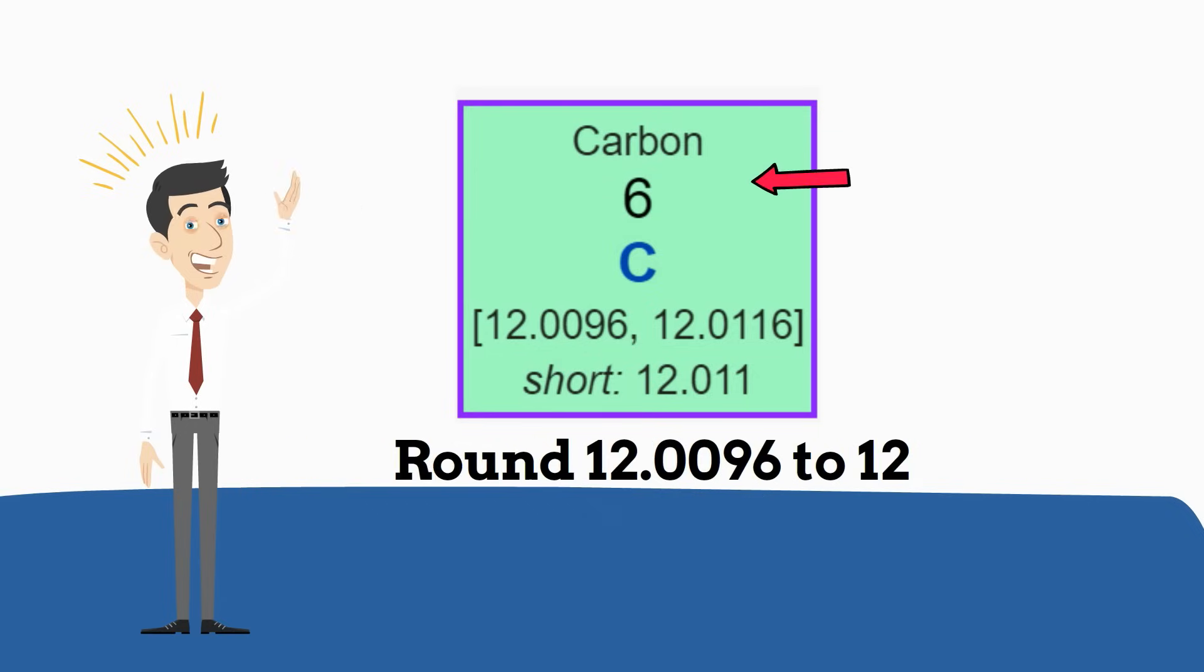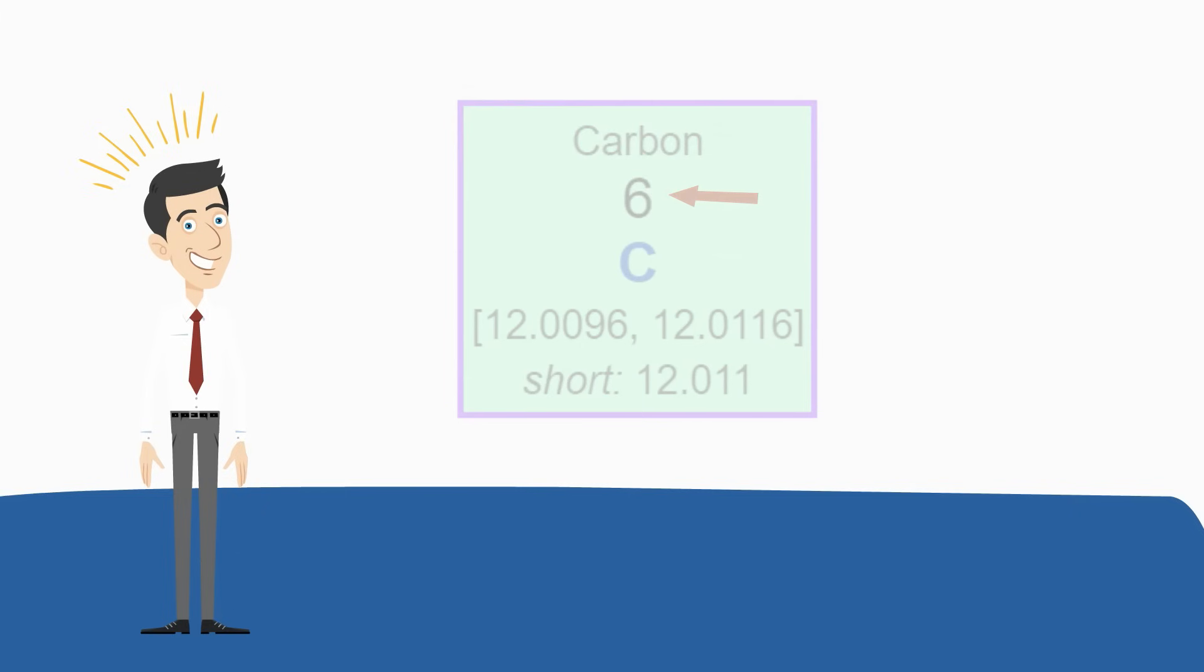Now a couple of extras. Notice the color of the background. There is usually on a periodic table a key that tells you what the different colors stand for. In this case, the green is a polyatomic non-metal. And also the atomic number can be different colors. In this case it is black and the key tells me that this is a solid.